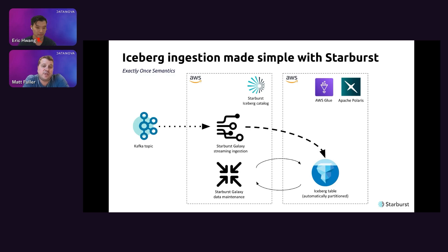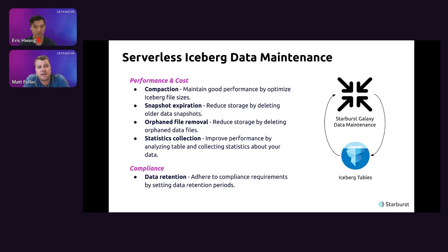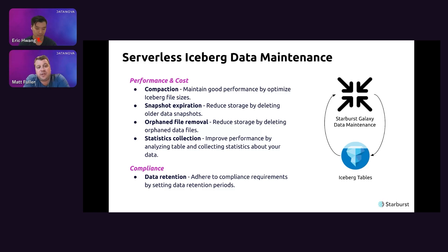You can also choose the catalog for your Iceberg tables. At Starburst we have a built-in catalog in Galaxy, and we also support Glue. In the near future we'll be supporting Apache Polaris as well. The data maintenance we offer includes compaction to maintain good performance by optimizing Iceberg file sizes, snapshot expiration, orphan file removal to reduce storage, statistics collection for the query optimizer, and a data retention policy — for example, rolling off data after 90 days. All of this is done automatically.